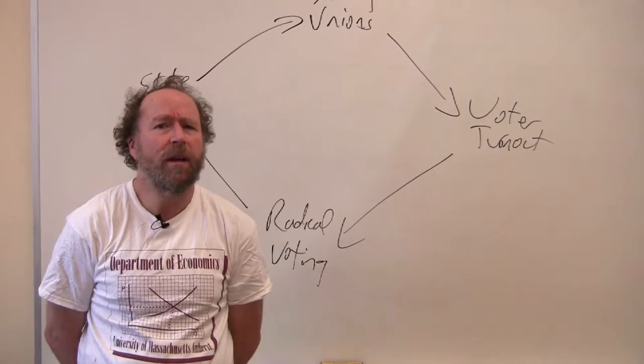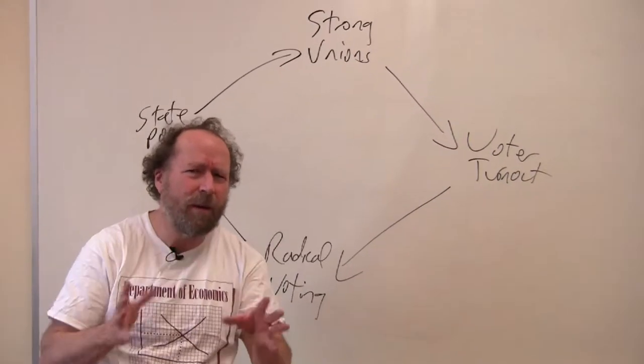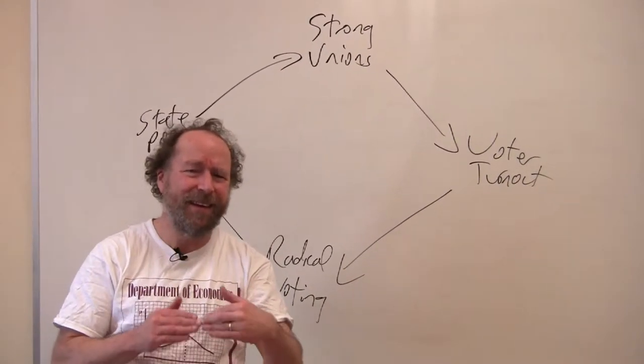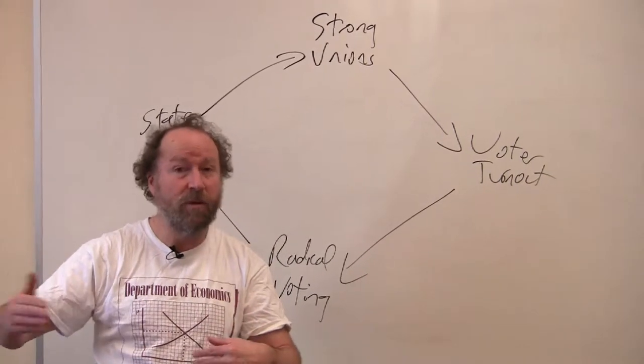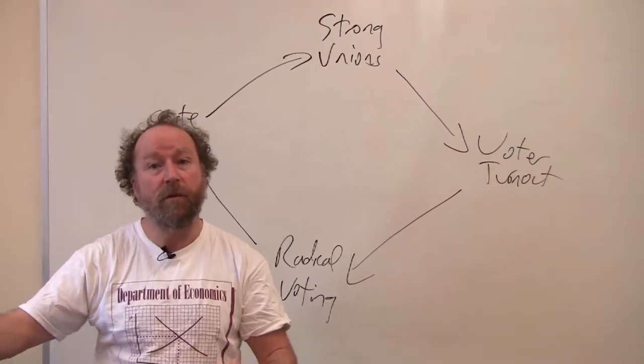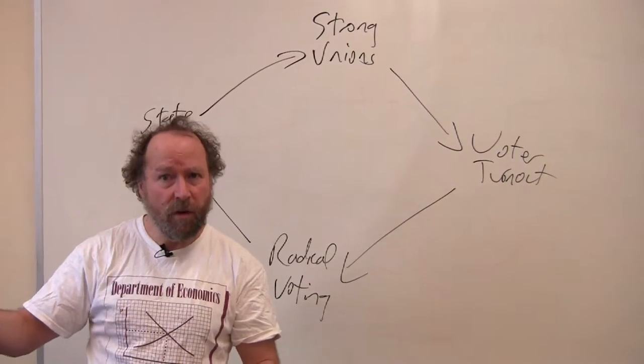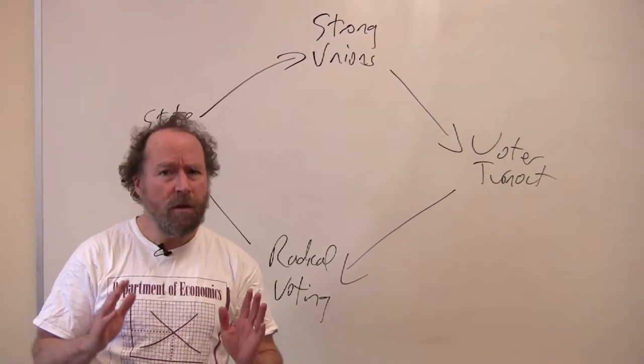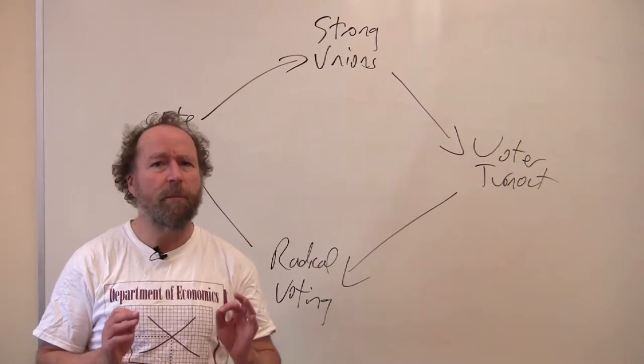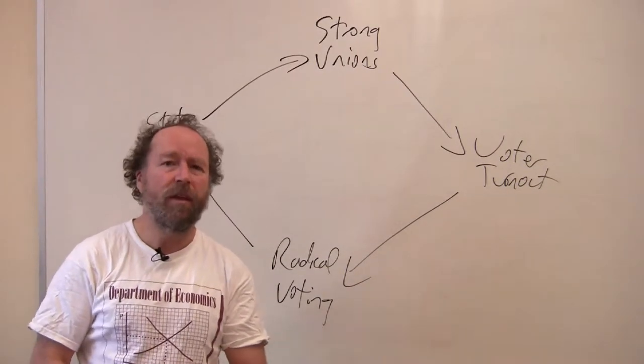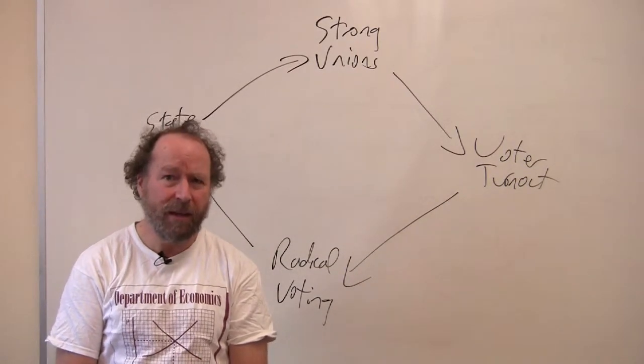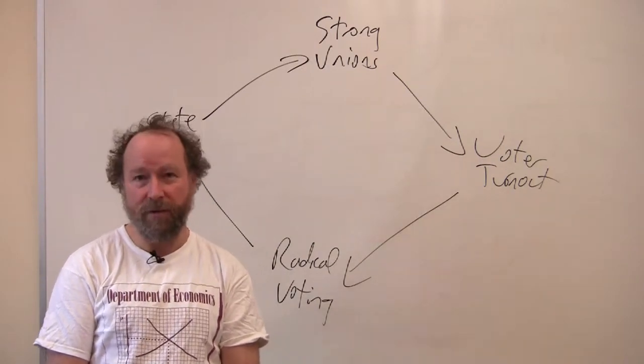While we can quibble about the end of the Age of Reform and whether the New Deal was a continuation of earlier reform under Wilson and Teddy Roosevelt or was something new, there's no question that the Age of Reform began with the assassination of William McKinley and the inauguration of Teddy Roosevelt.